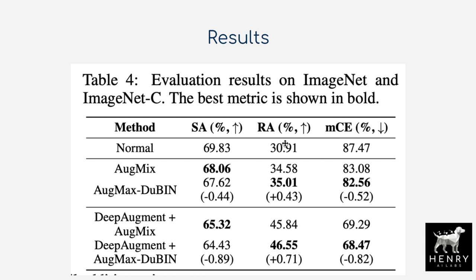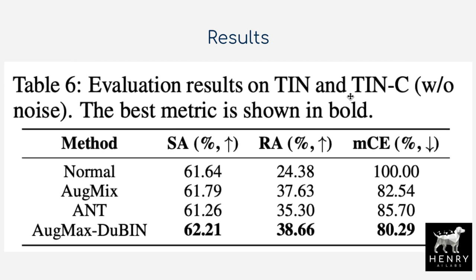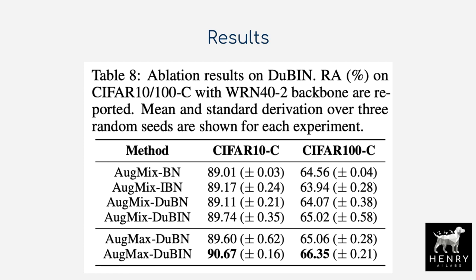Results on ImageNet-C (corruption test) and Tiny ImageNet compare Augmax against AugMix, DeepAugment, and ANT baselines. Augmax incurs only a 1.5x training overhead compared to AugMix for computing the adversarial weighting, compared to other adversarial training schemes that incur much larger overhead — roughly 37,000 vs 5,000 iterations in compute cost, making Augmax practically efficient.